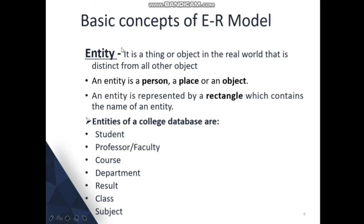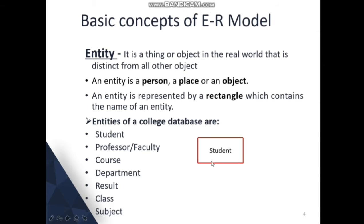So what is an entity? An entity is a thing or object in the real world that is distinct from all other objects. For example, a person or place is an object — you can take any thing as an entity. An entity is represented by a rectangle which contains the name of the entity. Examples of entities for a college database are students, professors, course, department, result, and class.